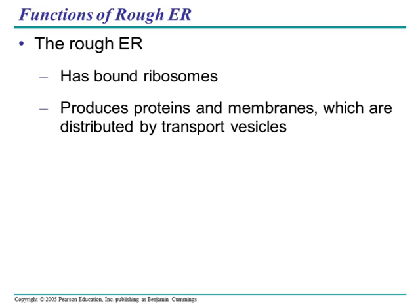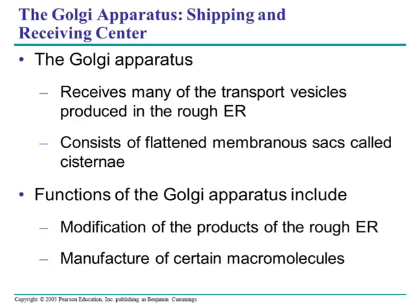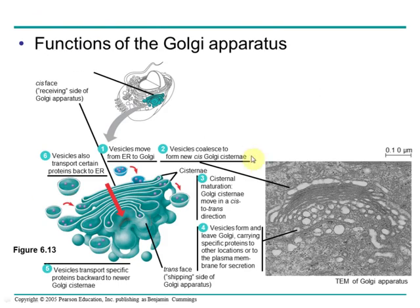Rough ER has bound ribosomes, and it produces proteins and membranes that surround the proteins, which then get transported by vesicles to the Golgi apparatus for further packaging. The Golgi apparatus receives those transport vesicles from the ER. The Golgi is made of cisternae, which are flattened sacs. It further modifies proteins that came from the rough ER and helps to manufacture some macromolecules. We often describe the Golgi as the post office — it does the final packaging before sending things out of the cell. Here you can see a real transmission electron microscope picture of the Golgi and cisternae.